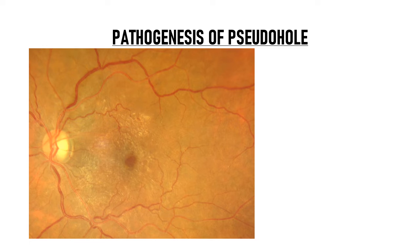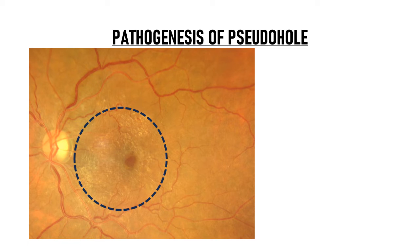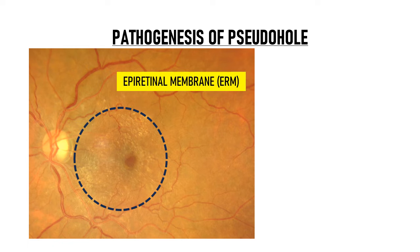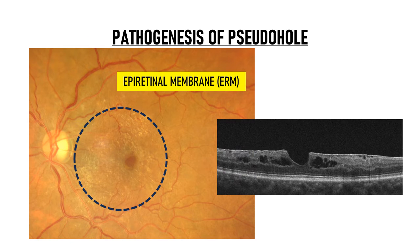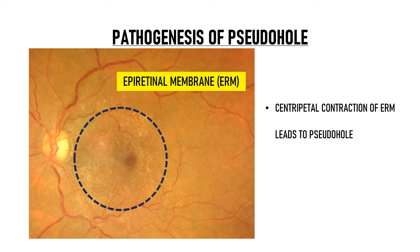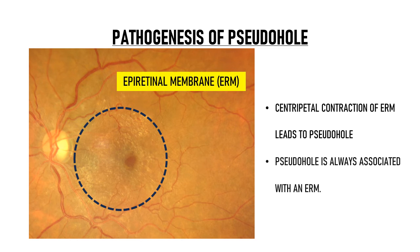So why exactly does a macular pseudo hole develop? If you see this image again, you will see a shiny membrane-like reflex surrounding the fovea. This is an epiretinal membrane, or ERM. On the OCT, this ERM appears as a hyperreflective line covering the internal limiting membrane. This line here is the ERM. Centripetal contraction of ERM leads to the development of a pseudo hole. Thus as a rule, a pseudo hole is always associated with an ERM.